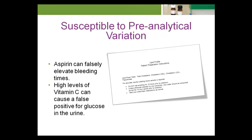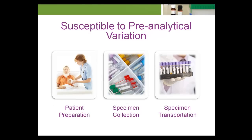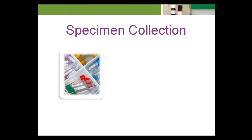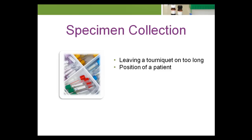High levels of vitamin C can cause a false positive for glucose in the urine. A patient taking excess amounts of vitamin C may need to stop taking it prior to a urinalysis test. Adherence to approved specimen collection procedures is important to control pre-analytical variation. During blood collection, the following errors can adversely affect the integrity of a specimen. Leaving a tourniquet on the arm, ankle, or hand too long can cause an elevation in some analytes.